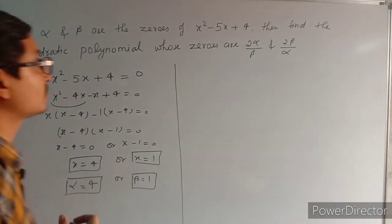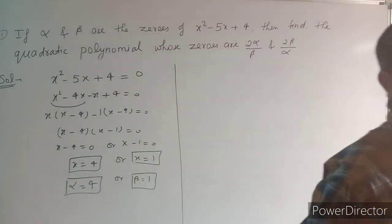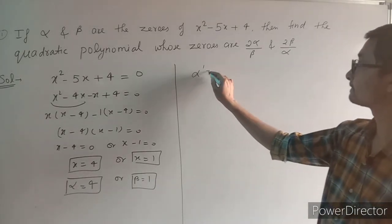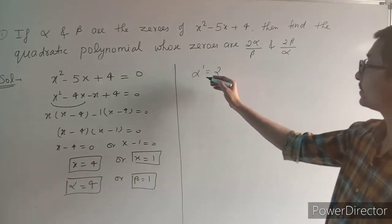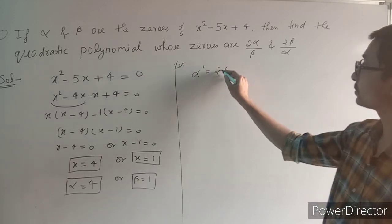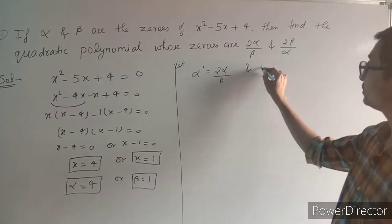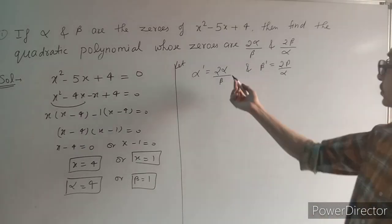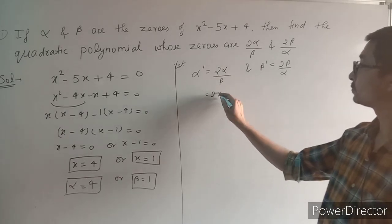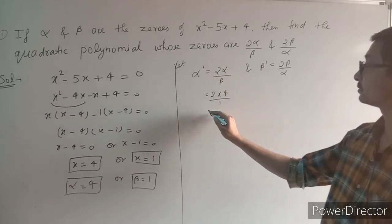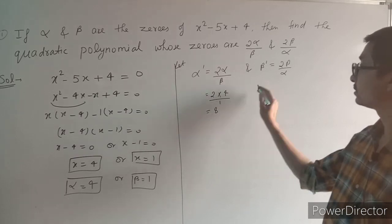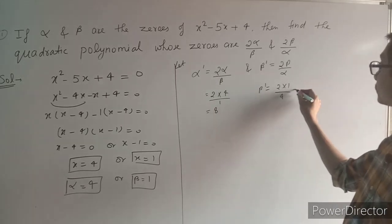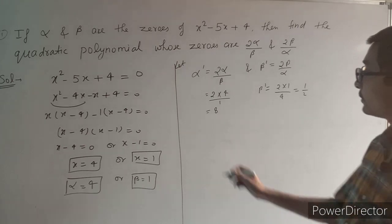So we get alpha = 4 and beta = 1. We have found the values of alpha and beta. Now, for the quadratic polynomial we need to find, let alpha' = 2α/β and beta' = 2β/α. So alpha' = 2×4/1 = 8, and beta' = 2×1/4 = 1/2.